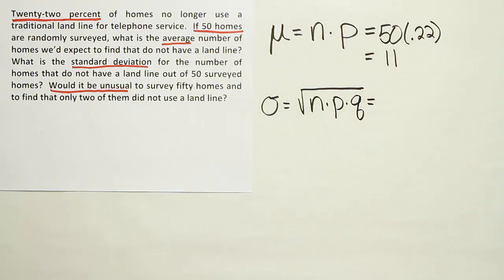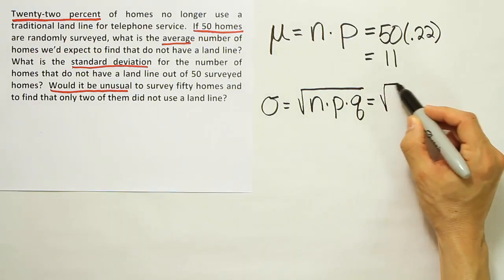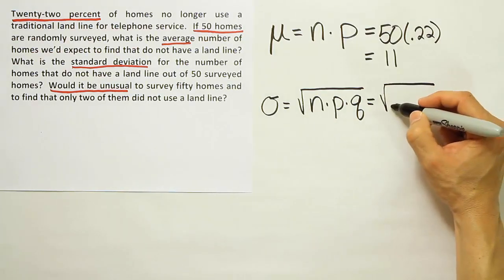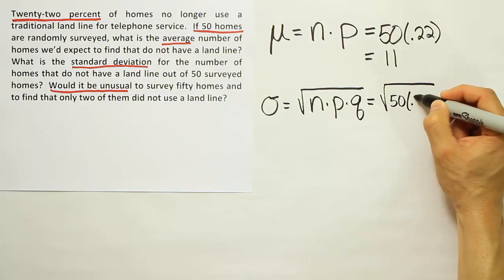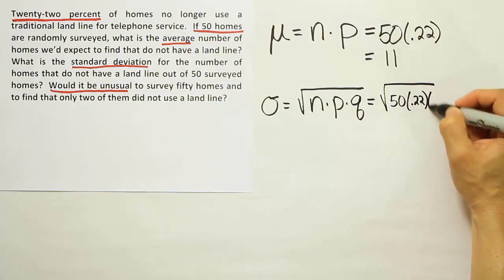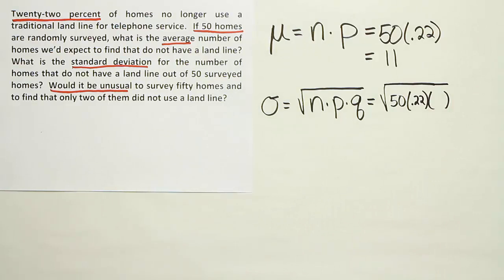Now n and p we already had from the previous problem. In fact, we already know what that result is, but we'll fill it in anyways. It's 50 times 0.22. And then we need q. So let's remind ourselves what q is.